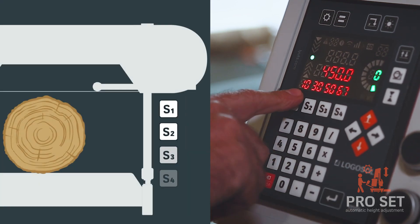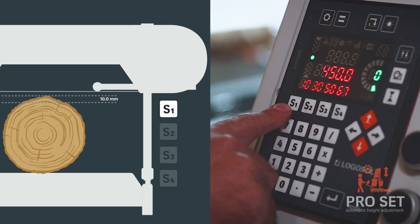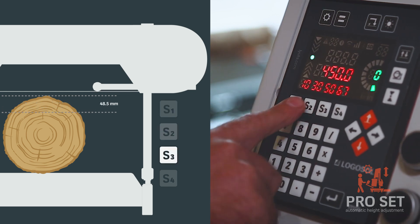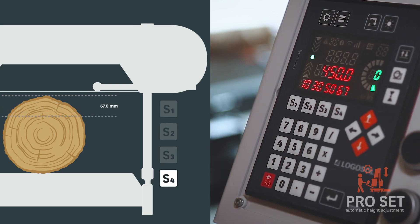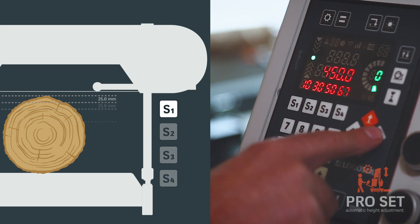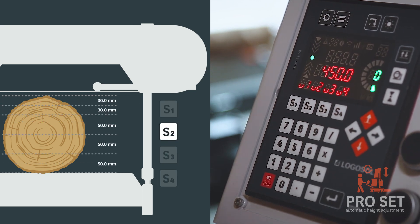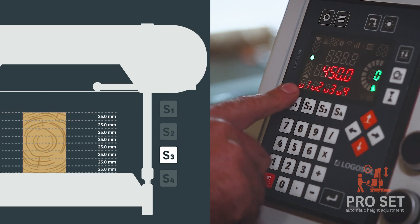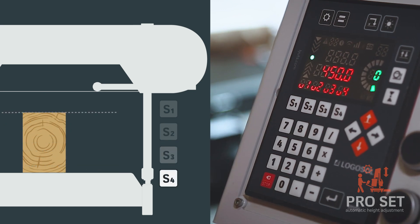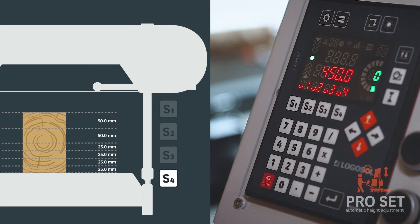And you have your favorite board thicknesses. You can save them here on S1, S2, S3, S4. And if you do your favorite lists of boards that you want to saw, and you have always the same, you can also save four different types of lists.